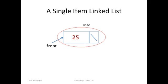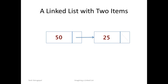Now let's look at a linked list with two items. The first node has 50 in it and points to the next node, which has 25 in it. The second node points to nothing. The first node has front pointing to it.